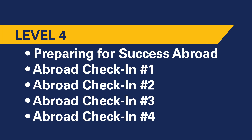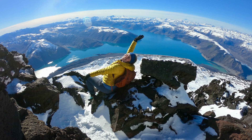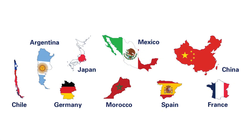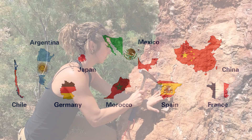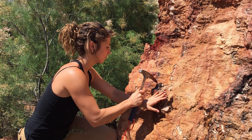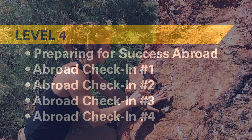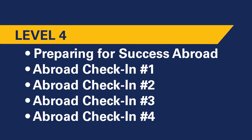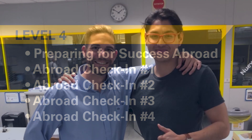In level four you will venture abroad with your hard-earned language and discipline-specific knowledge to your IGP host country. During the first semester you will take courses at an IGP partner university, and during the second semester you will complete your international fieldwork experience. You will check in regularly with your IGP mentor as you navigate a new way of life abroad, practicing your discipline and language skills in real-world experiences.